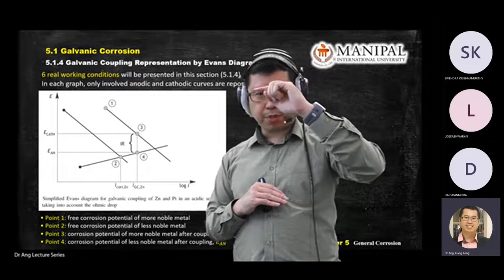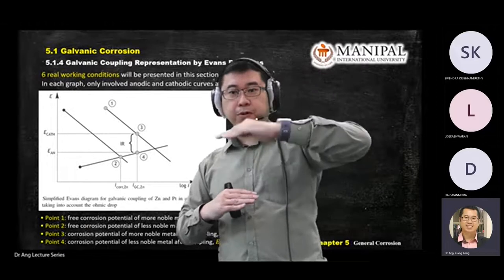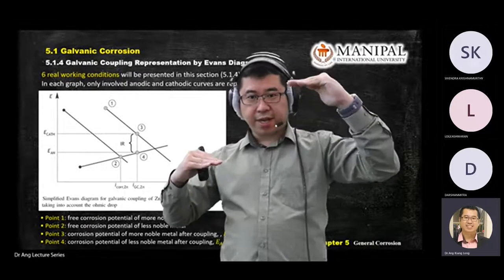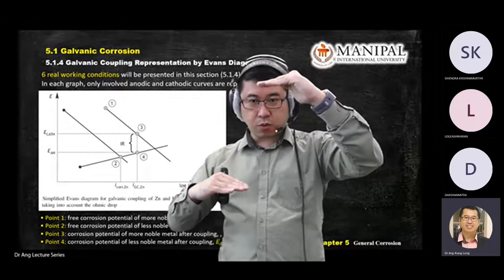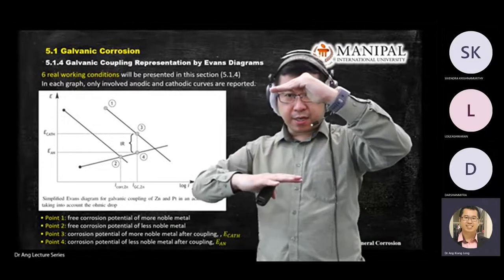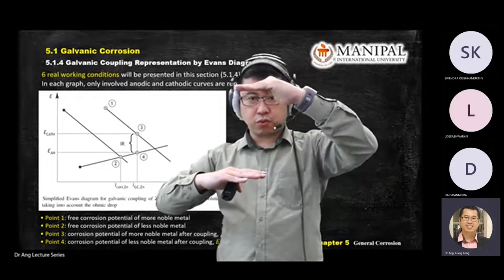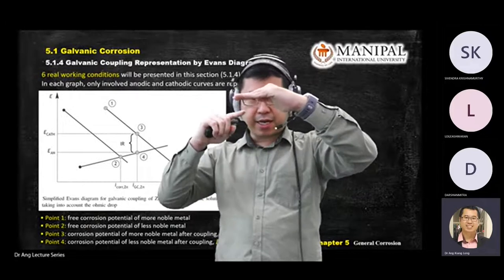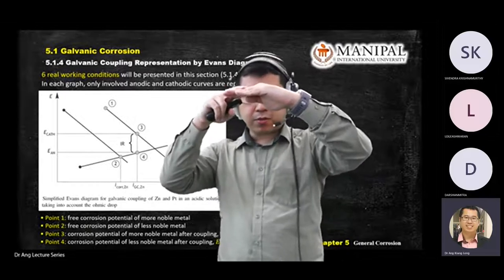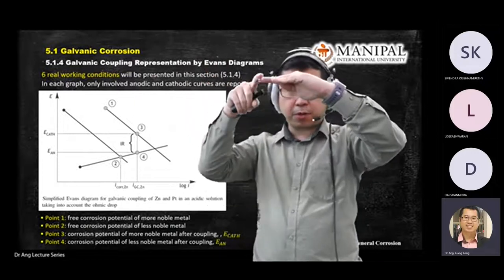Those with more positive voltage will go up — higher nobility metals. Those with lower voltage will go down — lower nobility metals. So lower nobility metals will corrode. They contribute electrons to the higher nobility metals.